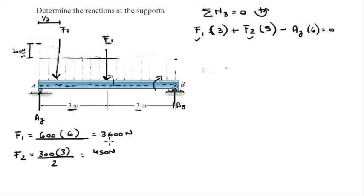We already found F1 and F2, so you go ahead and you plug them in, 3,600 and 450 respectively. And you solve for AY, and you get that AY is equal to 2.175 kilonewtons.